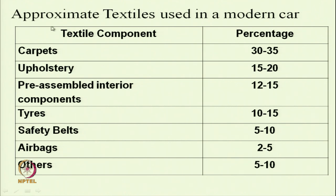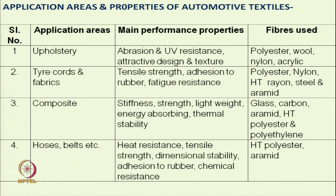The approximate textile usage in terms of percent: carpet 30 to 35%, upholstery 15 to 20%, airbag 2 to 5%. For upholstery, the main characteristic requirements are abrasion and UV resistance, and attractive design and textures — for this, polyester, wool, nylon, and acrylics are used. For tire cord fabrics, tensile strength, adhesion with rubber, and fatigue resistance are important — for that, polyester, nylon, and high-tenacity rayons are used, and sometimes aramids.